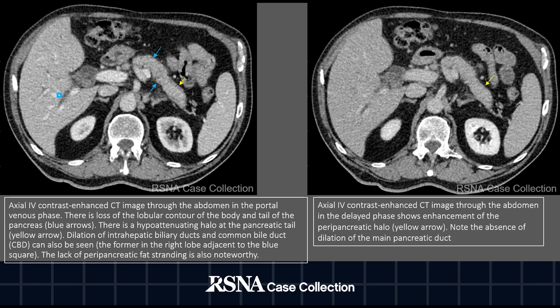Here we see side by side two axial IV contrast-enhanced CT images of the abdomen. In the image on the left, acquired during the portal phase, we can see that the pancreas has lost its lobular contour, denoted by the blue arrows, as well as a hypoattenuating halo at the pancreatic tail shown by the yellow arrow. It is also important to note the lack of peripancreatic fat stranding and the absence of pancreatic duct dilation.